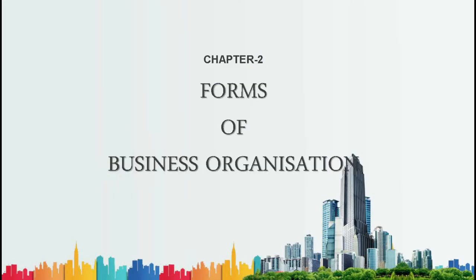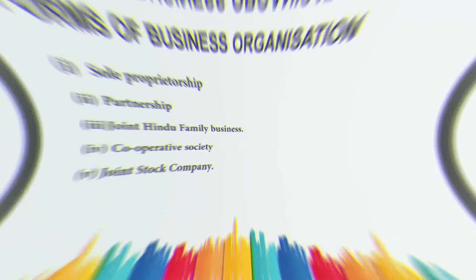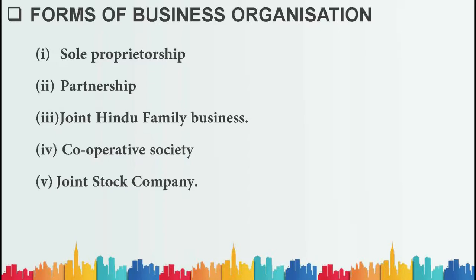Welcome to online business class. Today we are starting with Chapter 2: Forms of Business Organization. The chapter name itself tells us it covers different types of business organization. We have five categories in this chapter: sole proprietorship, partnership, joint Hindu family, cooperative society, and joint stock company. We'll briefly discuss the features, advantages, disadvantages, and meaning of each.